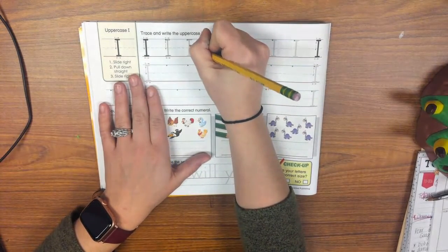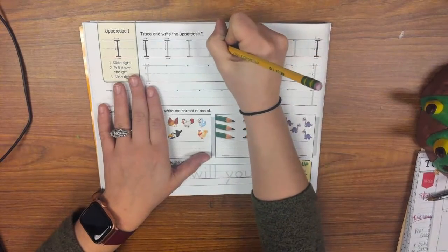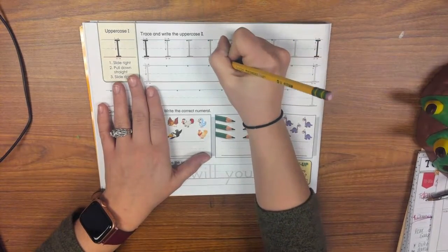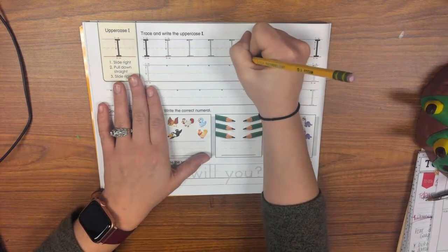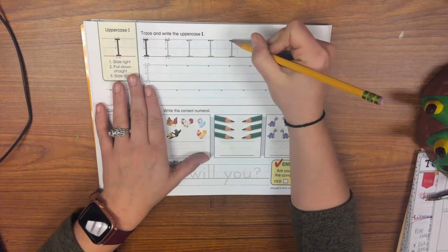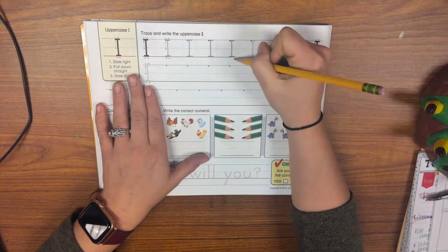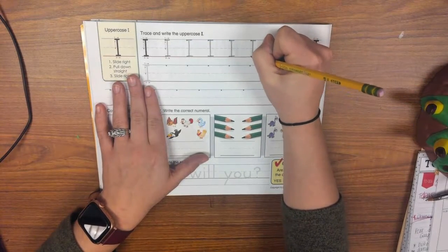So slide right, pull down straight, slide right. Slide right, pull down straight, slide right. Slide right, pull down straight, slide right. Make sure that your uppercase I is touching the top line and the bottom line. Now we don't have any floating eyes anywhere.